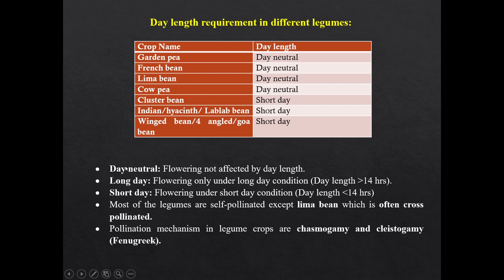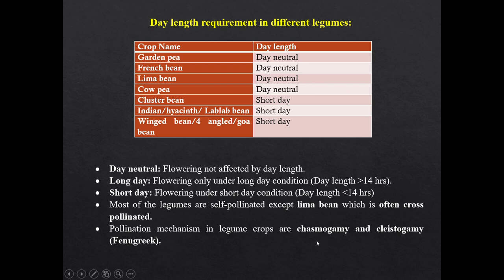You have to remember the definitions of day-neutral, long-day and short-day plants. In day-neutral plants, flowering is not affected by day length. Long-day plants flower only under long-day conditions — day length more than 14 hours. Short-day plants flower only under short-day conditions — day length less than 14 hours. Most legume crops are self-pollinated except lima bean, which is often cross-pollinated. Most legume crops are self-pollinated due to the mechanism of chasmogamy and cleistogamy. In cleistogamy, the flower never opens, so self-pollination is ensured. An example of cleistogamy is fenugreek.